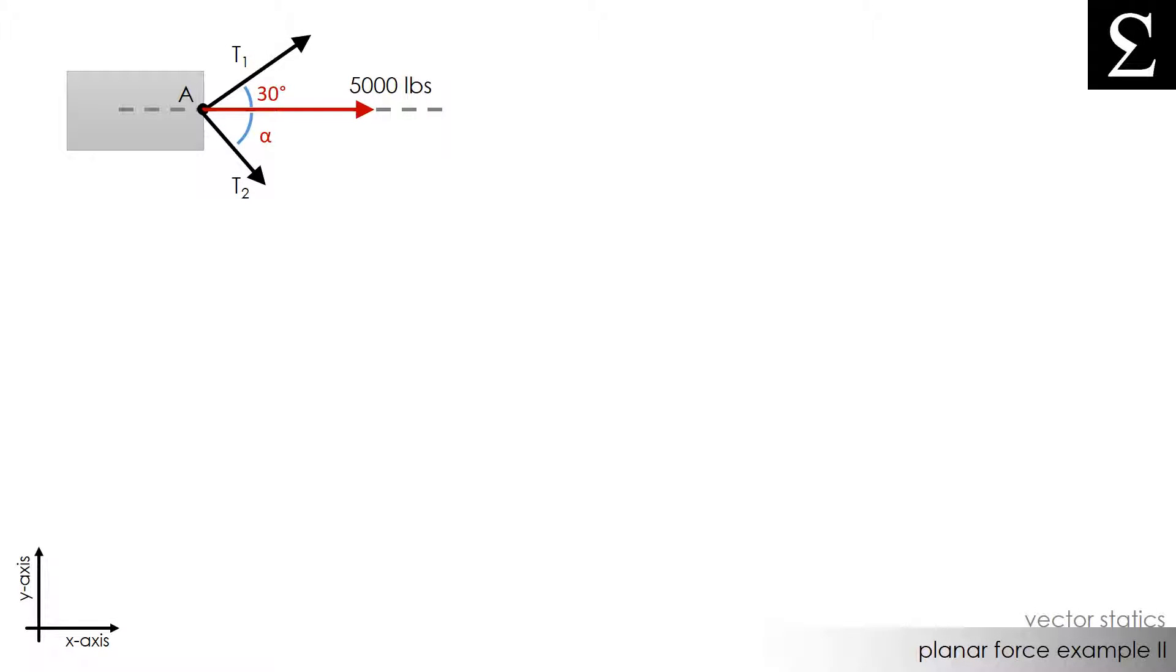In this example, we are looking down at a box that is being pulled to the right by two forces. The resultant of these two forces is directly to the right with a force of 5,000 pounds. This is given information.